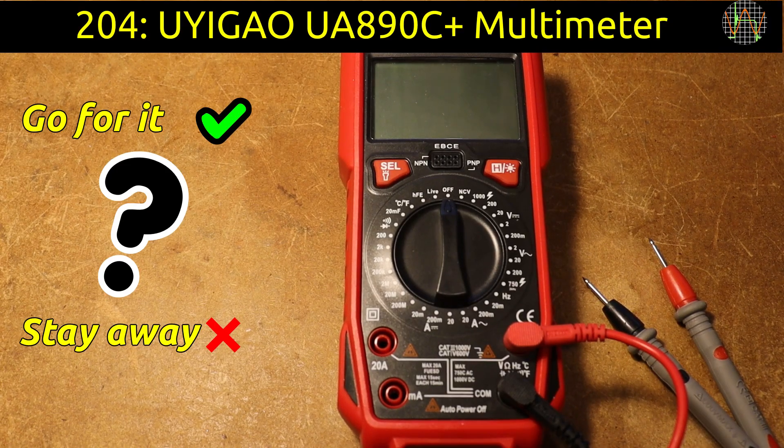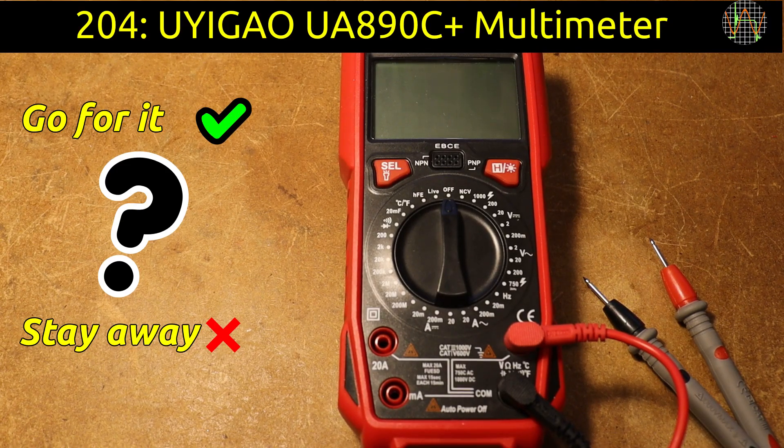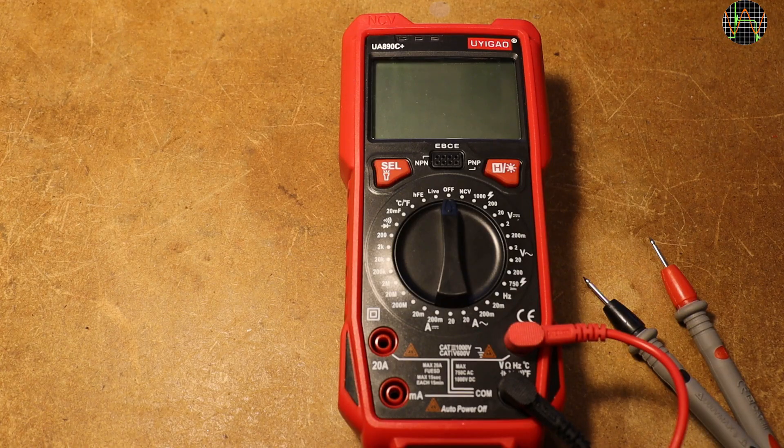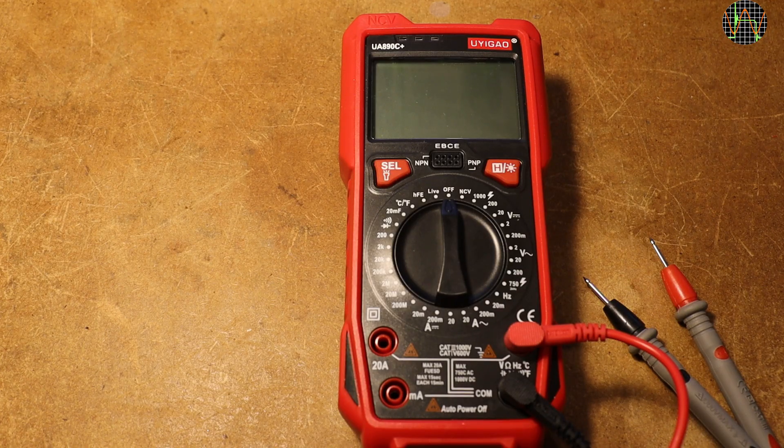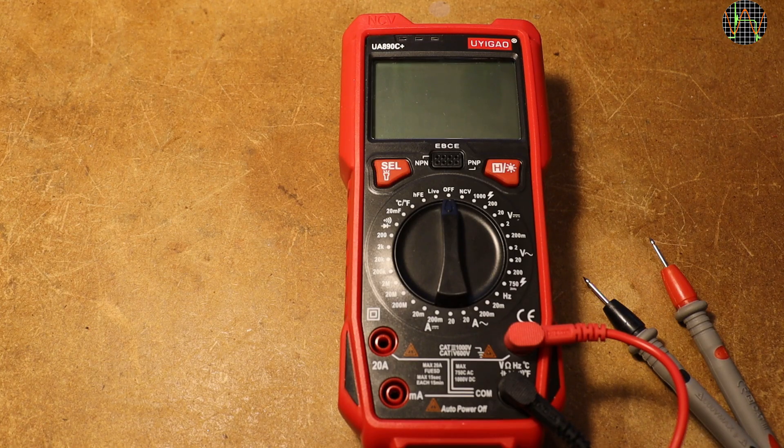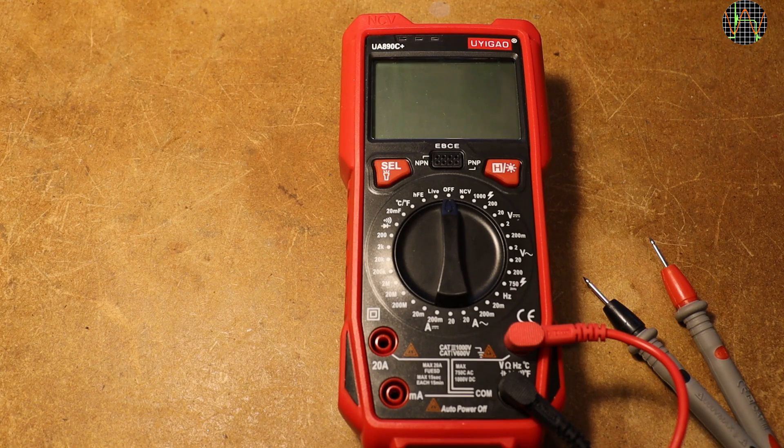Hi there. On the bench today, another multimeter I bought as part of a job lot on eBay. It's the UA890C Plus from Uyigao. It came with leads and manual in the original box. Let's see if it's any good.